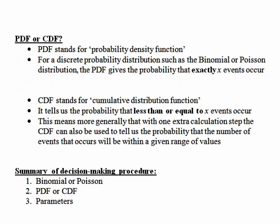There is one other thing to consider in making sure we use the correct distribution and tables to calculate probabilities: whether we are dealing with a PDF problem or a CDF problem. PDF stands for probability density function, and for a discrete probability distribution such as the binomial or Poisson, the PDF gives the probability that exactly x events occur — of the form probability x equals some particular number. CDF stands for cumulative distribution function, and the CDF gives the probability that less than or equal to x events occur. More generally, with one extra calculation step, the CDF can also give the probability that the number of events falls within a given range of values.